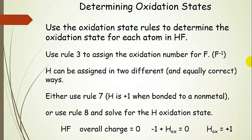Hydrogen can be assigned in two ways. You can use rule 7 — hydrogen bonded to a non-metal is plus 1. Or we can use rule 8: the overall charge on the compound is 0, so we sum up the oxidation states: fluorine is minus 1, and the unknown oxidation state of hydrogen equals 0, giving us plus 1 for hydrogen. Either way works — if we add plus 1 and minus 1 together, we get 0.